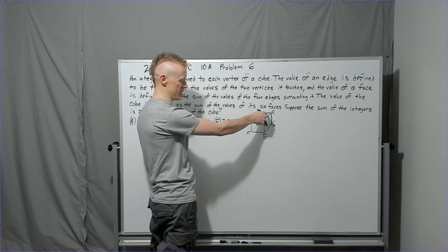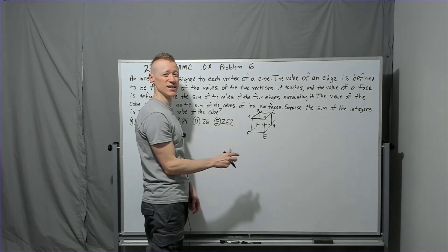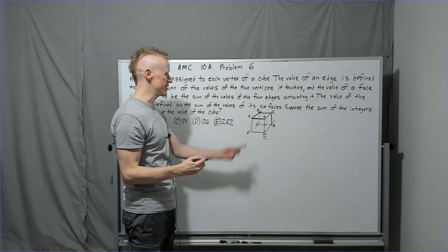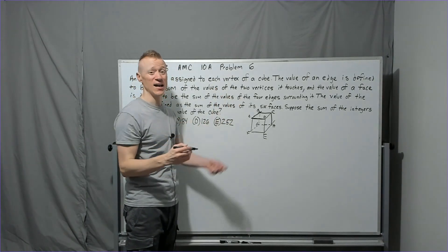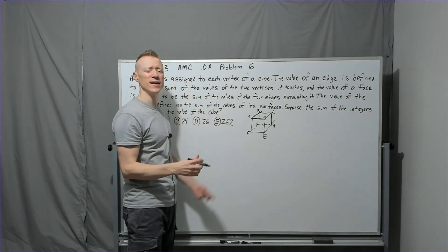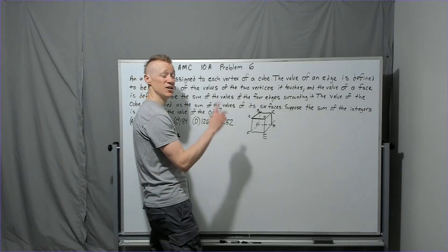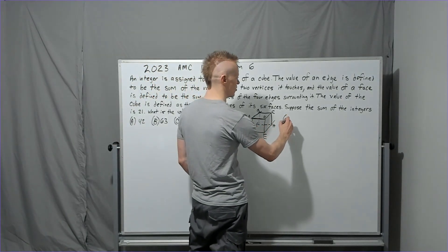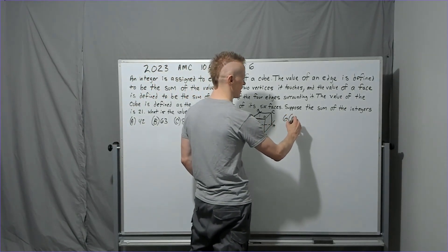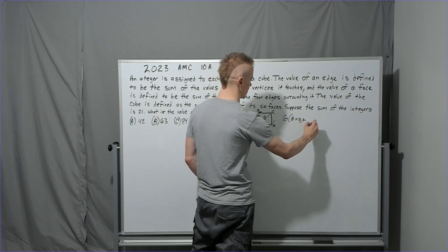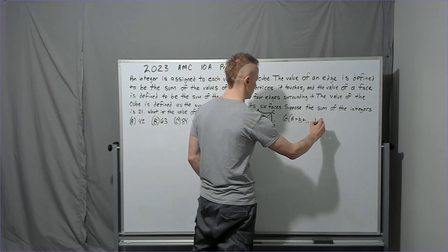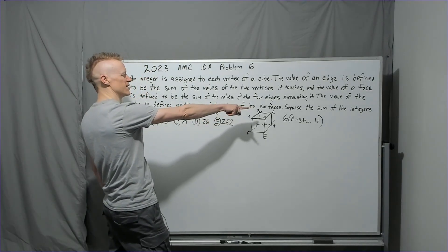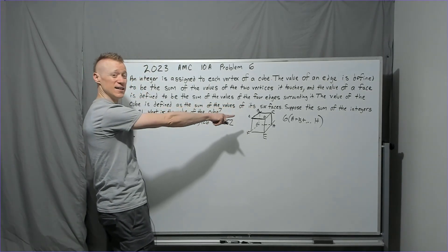So essentially, vertex a was used twice on this face, twice on another face, and twice on another. Because the whole thing is symmetric, every vertex is used six times. So the cube's total value is 6 times (a + b + ... + h).